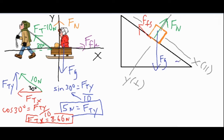We take the angle of the incline and translate it into the triangle. We draw a perpendicular component fgy and a parallel component fgx. This is similar to what we did before, with some key differences.